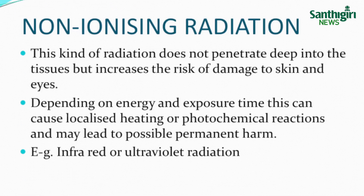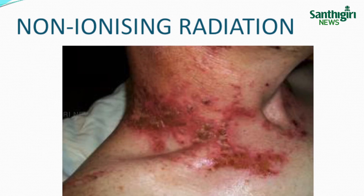Non-ionizing radiation: this kind of radiation does not penetrate deep into tissues, but increases the risk of damage to skin and eyes. Depending on energy and exposure time, it can cause localized heating or photochemical reactions and may lead to possible permanent harm. The severity of injury can be assessed by evaluating the extent and depth of injury. Suitable examples for non-ionizing radiation are infrared and ultraviolet radiations.